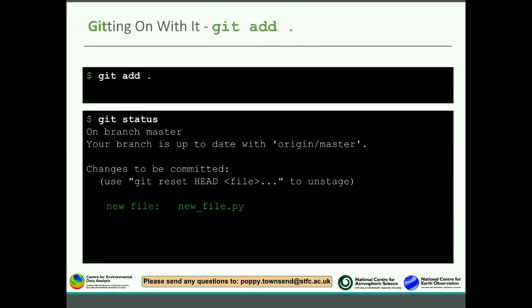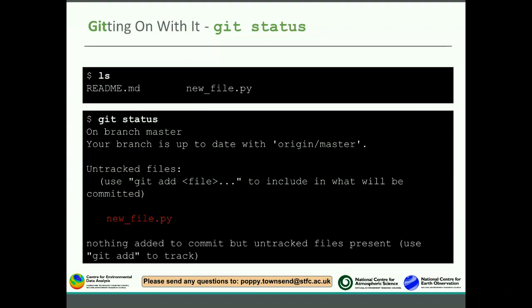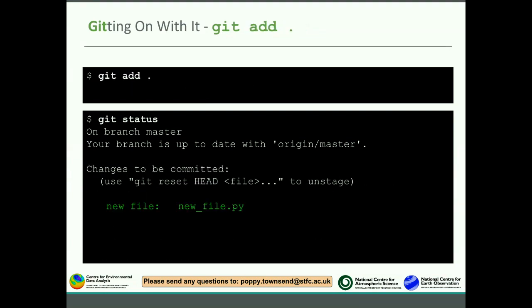So then you do 'git add .' — that dot is important, it means add everything here. Once you do that and type git status again, it will no longer say 'untracked files'; instead it says 'changes to be committed.' You can set up your command line to show colours, so it will turn green if it's staged and red if it's uncommitted.